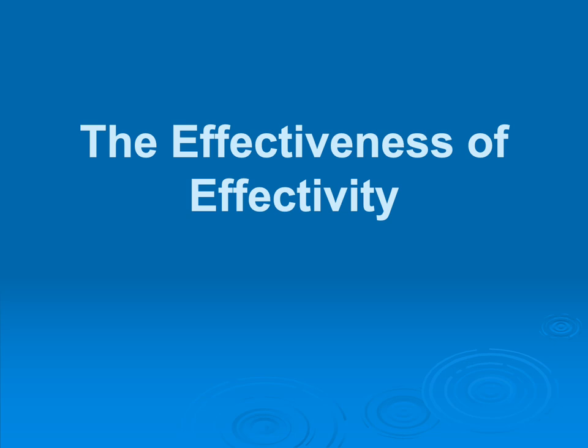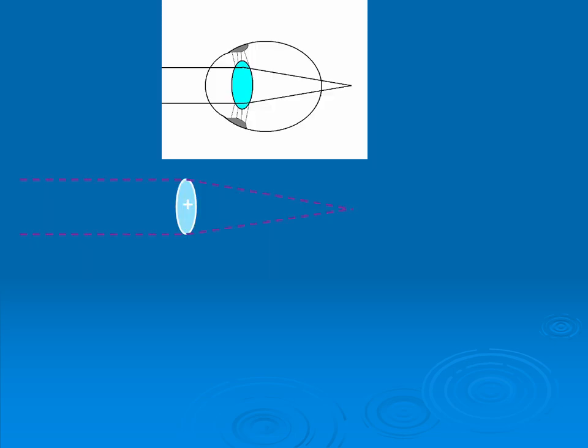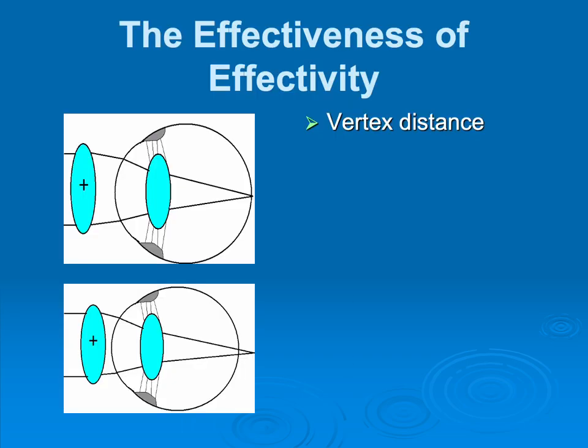So now we're going to talk about the effectiveness of effectivity. So here we have clearly a hyperopic eye because the far point's back behind the eye. And as you know, that is corrected with a plus lens such that the focal point of the plus lens falls on the far point of the hyperopic eye. But what if the position of that lens were to change? Looking at the top diagram, the lens is sitting in the perfect spot. It's adding convergence. But if we move that lens just a little bit closer to the eye, the focal point will move in the same direction and now be back behind the eye again. The distance from the lens to the cornea is called the vertex distance. And that distance matters.